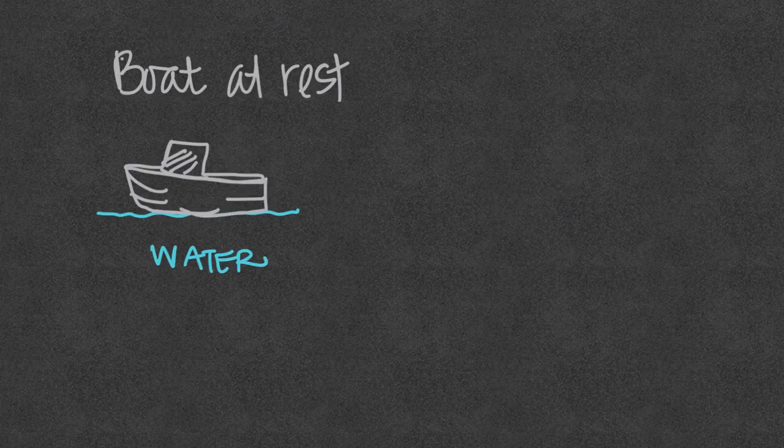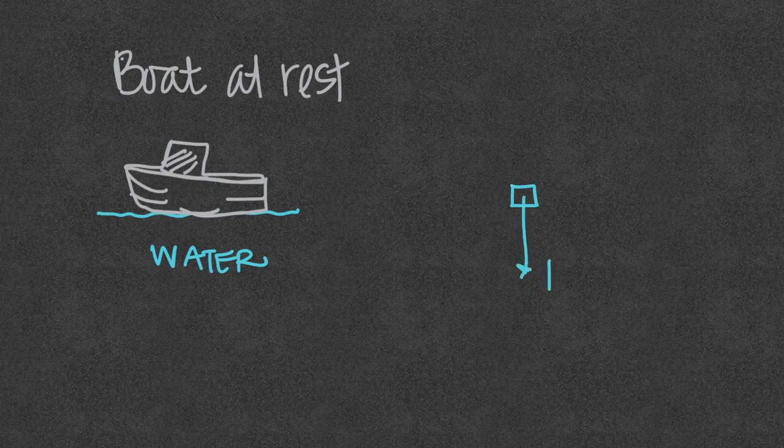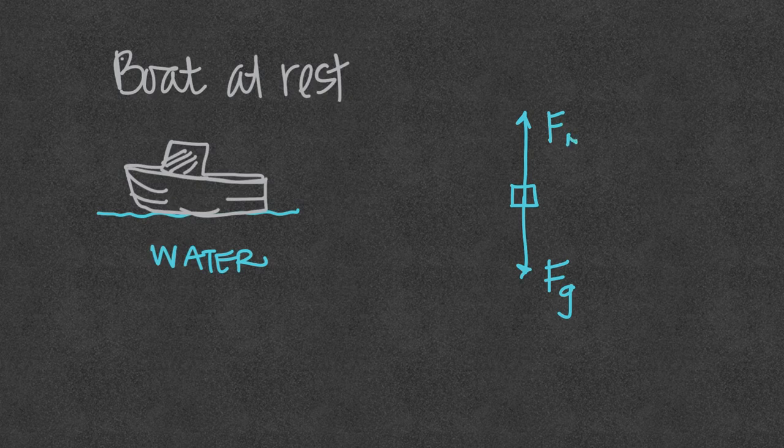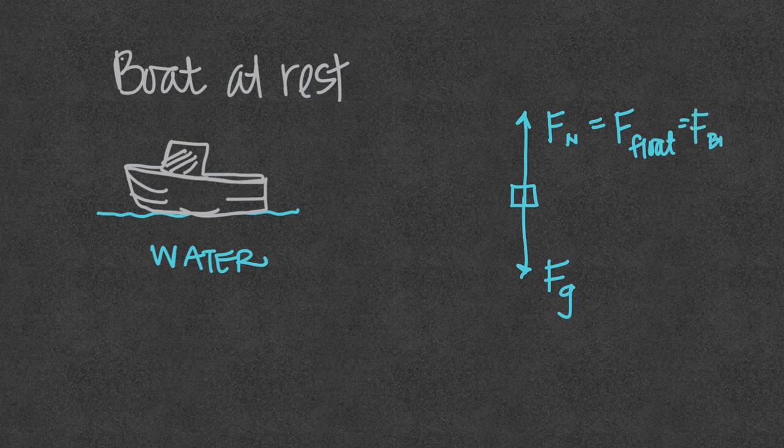Now in this case we have a boat at rest on water so the force diagram or the free body diagram would be the earth definitely pulls down on the boat and the water definitely pushes up on the boat. You could call this a normal force if you consider the water as having a surface. You could also call it maybe force float if you wanted to because there is a floating force or you might even call it the buoyant force if you wanted to.